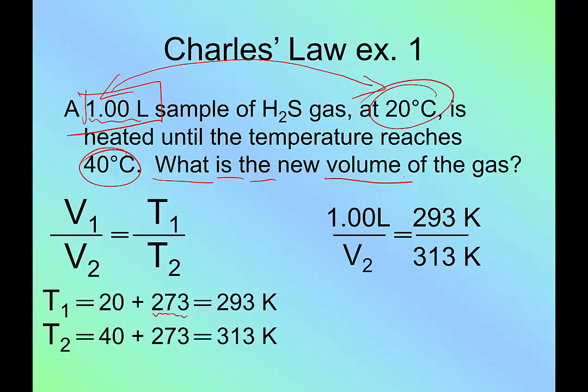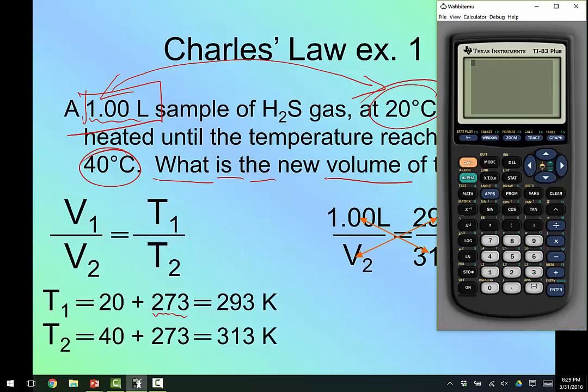Now, like a proportion, we're going to cross multiply. So I'm going to multiply the bottom left by the top right and the top left by the bottom right. Let me get my calculator out. So I'm going to take my bottom right and multiply by my top left. So 313 times 1. Obviously, that's 313. And then I'm going to divide by the thing that multiplied by the variable, divided by 293. And I get 1.07.